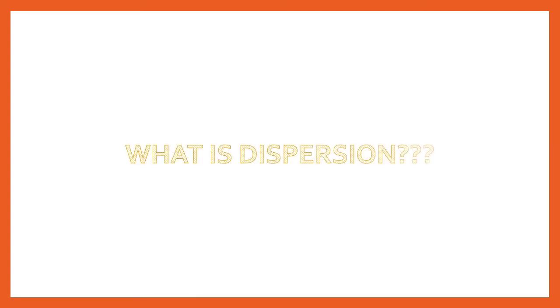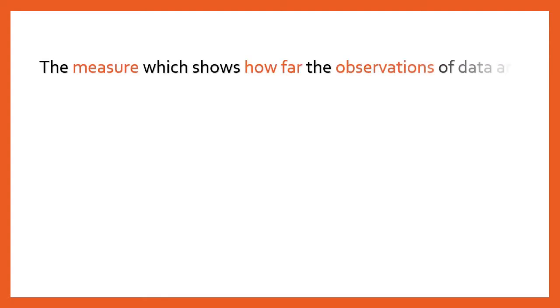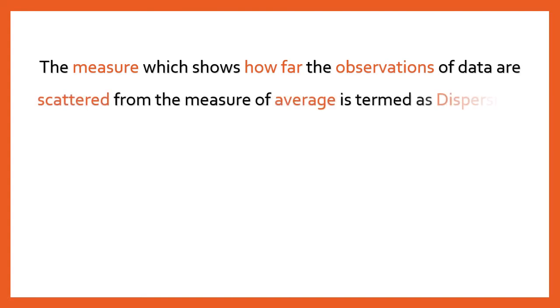In this new chapter, we are going to study the measures of dispersion. The first question which arises is: what is dispersion? The measure which shows how far the observations of the data are scattered from the measure of average is termed as dispersion.